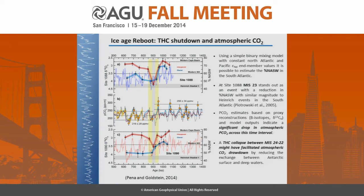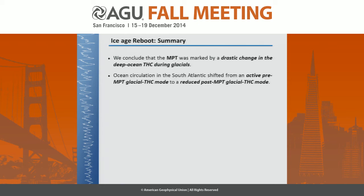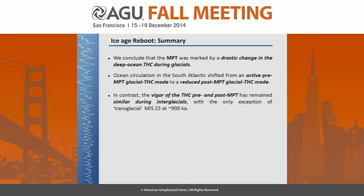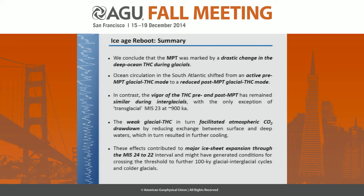In summary, the mid-Pleistocene transition was marked by a drastic change in deep ocean thermohaline circulation during glacials. Ocean circulation in the South Atlantic shifted from an active pre-MPT glacial mode to a reduced post-MPT glacial THC mode. In contrast, the THC pre- and post-MPT remained similar during interglacials, with the exception of the transglacial MIS 23 at around 900 kiloyears. The weak glacial thermohaline circulation might have facilitated atmospheric CO2 drawdown by reducing exchange between surface and deep waters, contributing to conditions that crossed the threshold to generate the 100-kiloyear glacial-interglacial cycles.